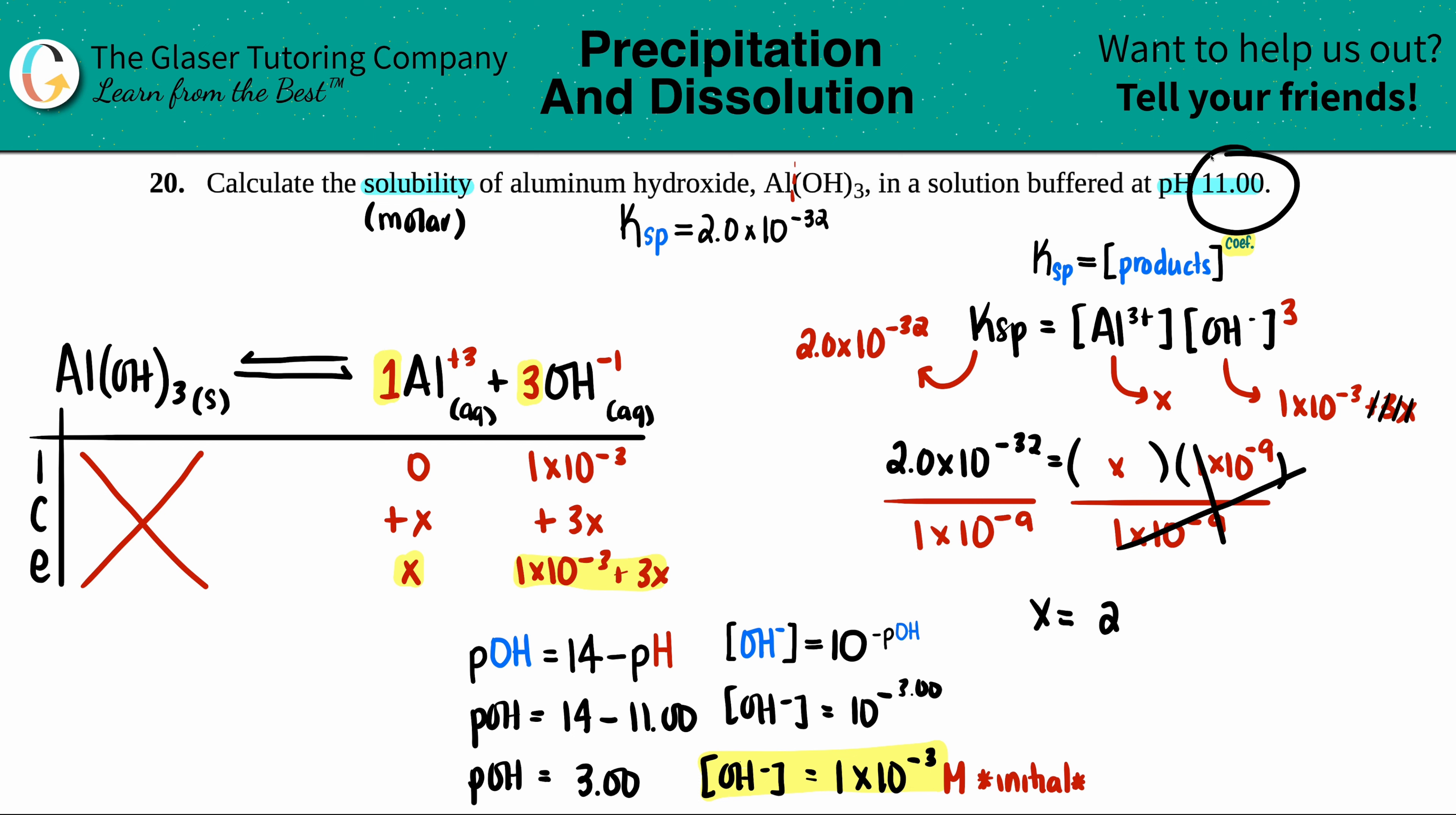And technically we should have three sig figs from the pOH of 3, so maybe I'll put the point zero zero, but does anybody care? No one cares at this point at chapter 15. Okay, so my x value is 2.0×10⁻²³.